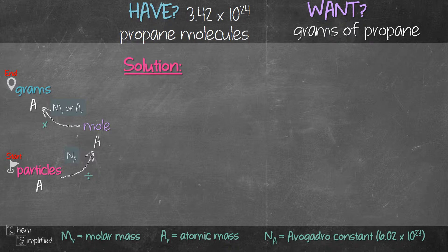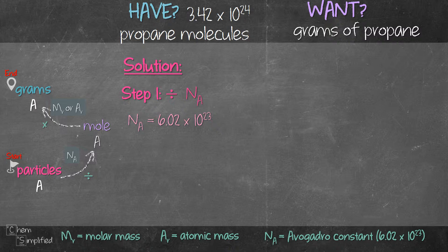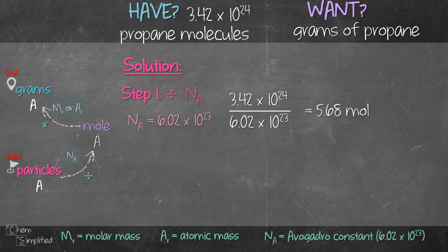We are now ready to set up the solution. In step 1, we'll go from particles A to moles A, and in step 2, we'll go from moles A to grams A — so that's two steps. The first step is to divide the given number of molecules, which is 3.42 times 10 to the power of 24, by Avogadro's constant, which is 6.02 times 10 to the power of 23. That comes out to be 5.68 moles — we've just calculated moles of propane.